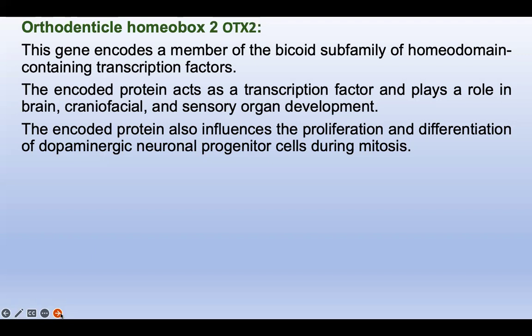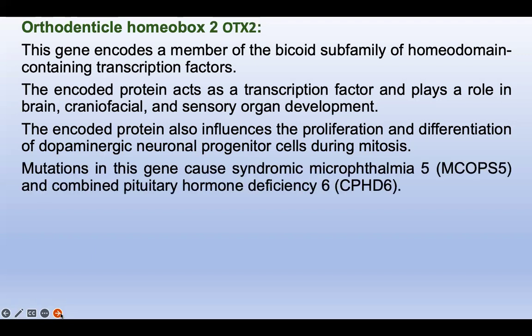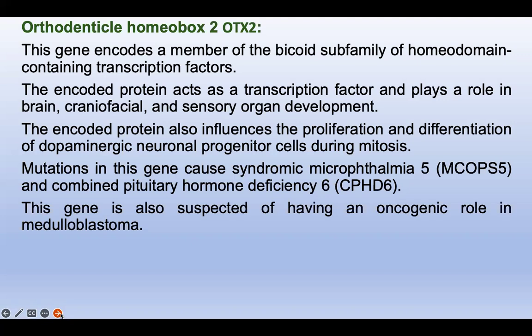The encoded protein also influences the proliferation and differentiation of dopaminergic neural progenitor cells during mitosis. Mutation in this gene causes syndromic microphthalmia 5 (MCOPS5) and combined pituitary hormone deficiency 6 (CPHD6). If there are mutations or abnormalities in the OTX2 gene, these two conditions can develop genetically in a baby.